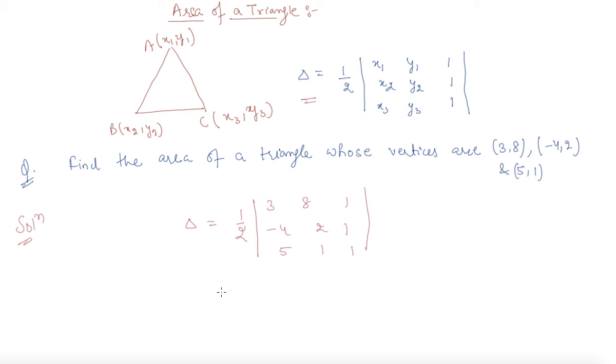So now by using the expansion, I can easily find out: 3 times (2 - 1) which is 1, minus 8 times (-4 - 5) which is -9, plus 1 times (-4 - 10) which is -14. So this is half into 3 plus 72 minus 14, which is 61 by 2.